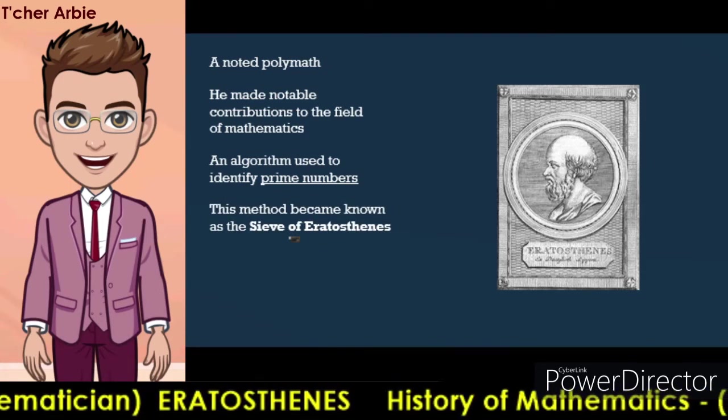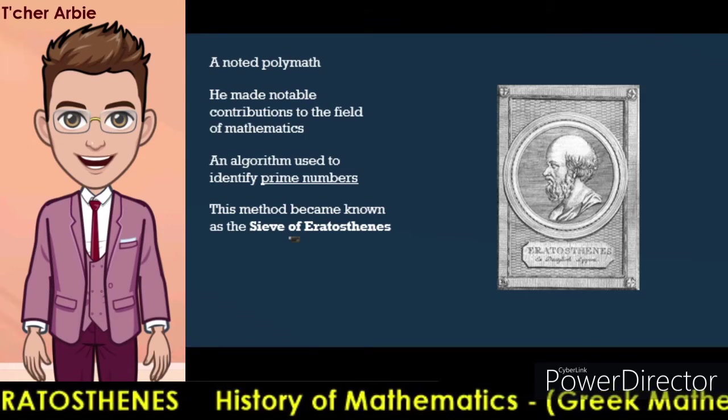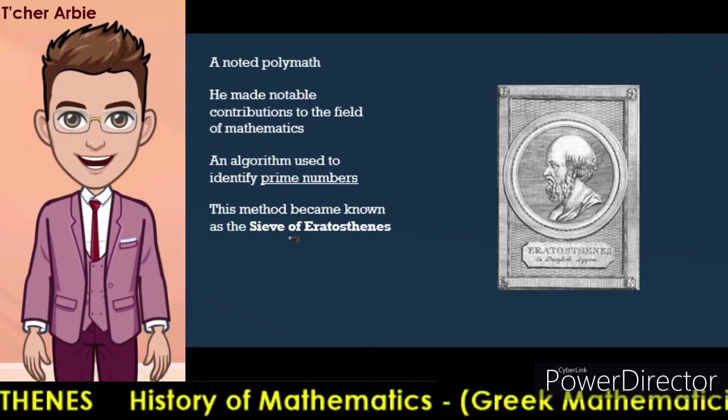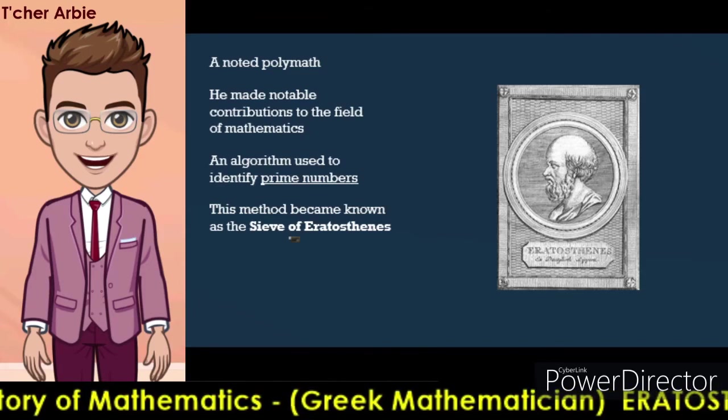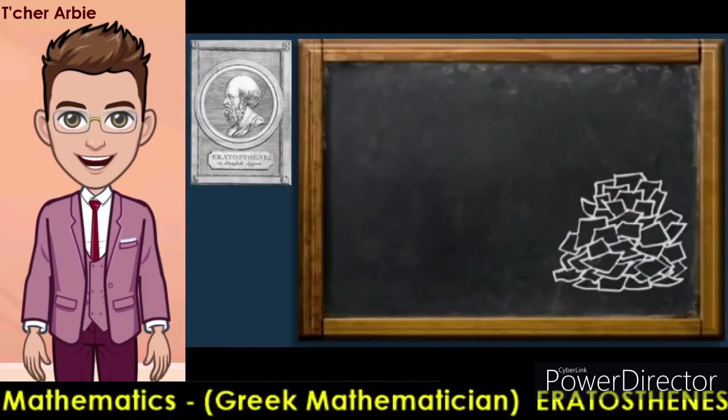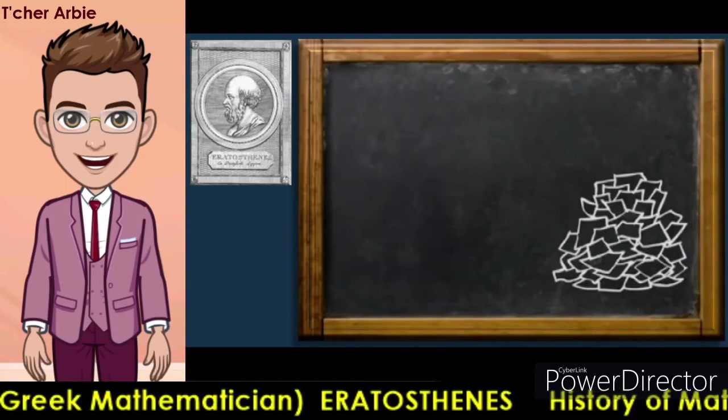This method became known as the sieve of Eratosthenes, as it works by filtering out the non-prime numbers in the same way that a sieve filters solids out of liquids. Let's watch this video clip and learn about how the sieve of Eratosthenes works.